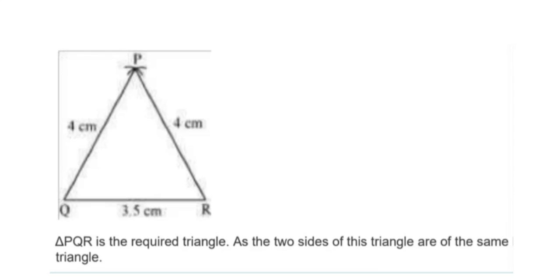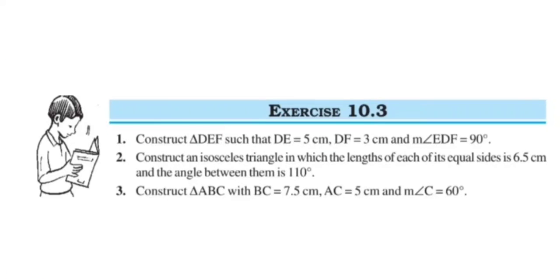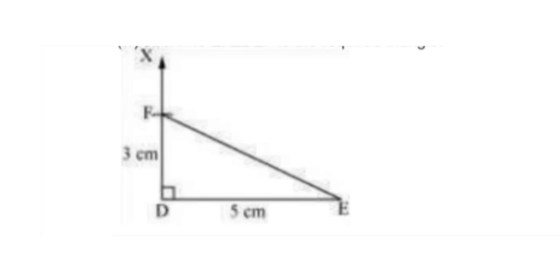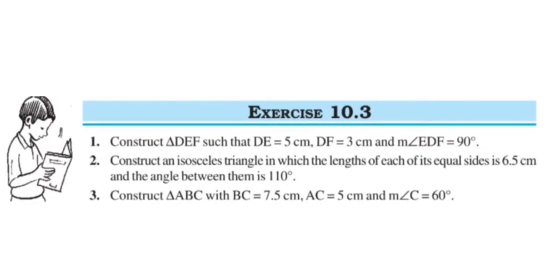Now see Exercise 10.3, Question 1: Construct triangle DEF such that DE is equal to 5 centimeters, DF is equal to 3 centimeters, and angle EDF is equal to 90 degrees. See the steps: draw a line segment DE of length 5 centimeters. At point D, draw a ray DX making an angle of 90 degrees with DE. Taking D as center, draw an arc of 3 centimeter radius; it will intersect DX at point F. Join F to E. So triangle DEF is the required triangle.